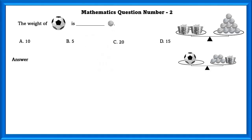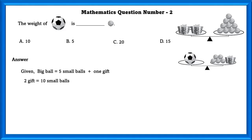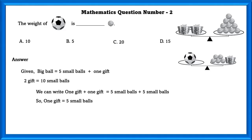Mathematics question number 2. The weight of a big ball is how many small balls? Given: big ball equals 5 small balls plus 1 gift, and 2 gifts equals 10 small balls. Using this we can find the value of 1 gift: 1 gift equals 5 small balls.